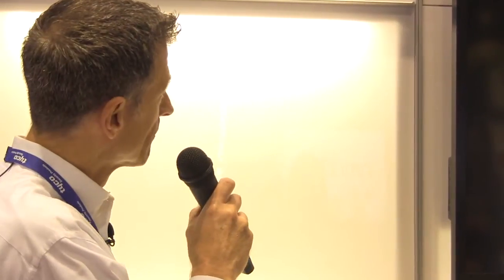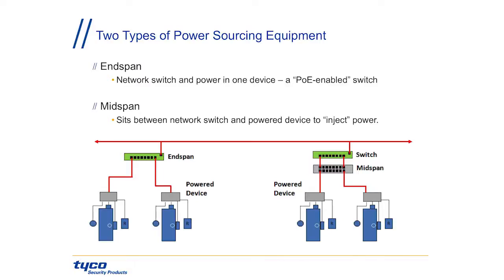As far as power sourcing equipment, there's actually a fork in the road. You can go down the endspan road or the midspan road. The endspan is basically a device that has a switch and the power functions in one device — a PoE-enabled switch.